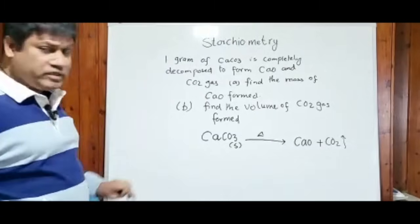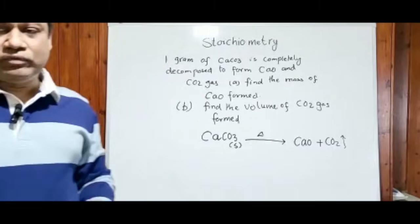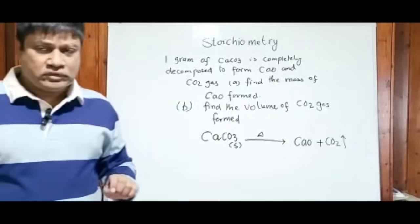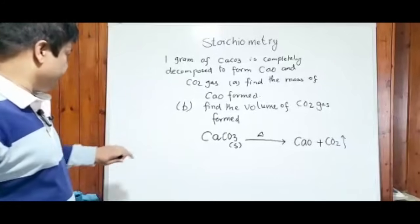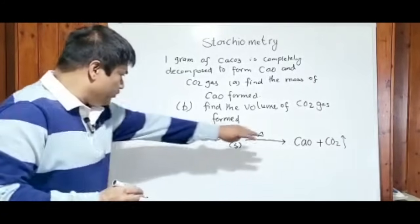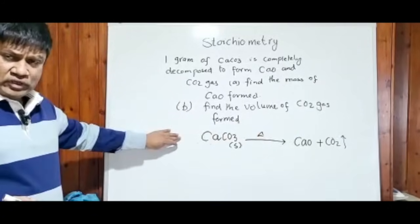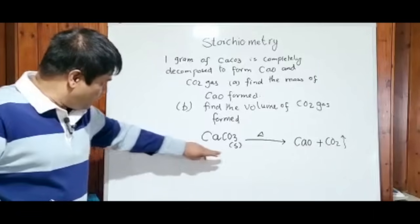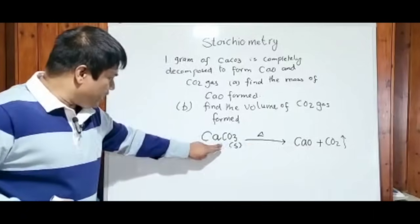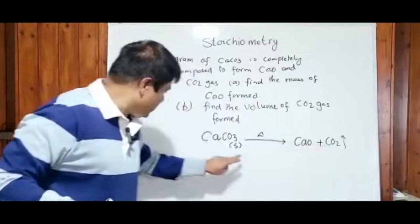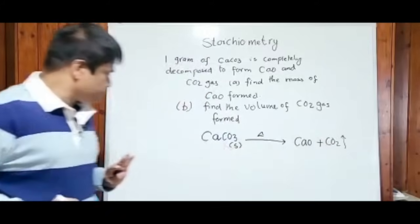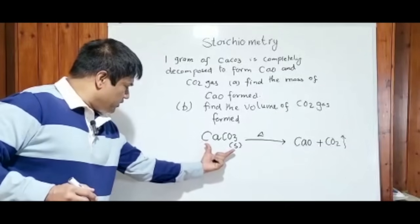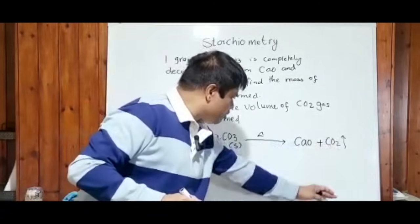Calcium carbonate — another name for it is limestone. When you look at the equation it is already balanced: one calcium on each side, one carbon on each side, three oxygen atoms on each side. The left-hand side is called reactants and the right-hand side is called products.